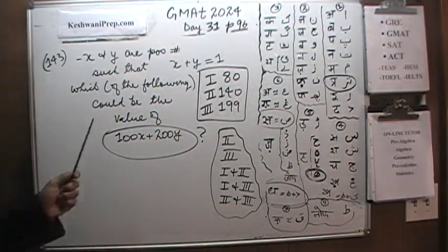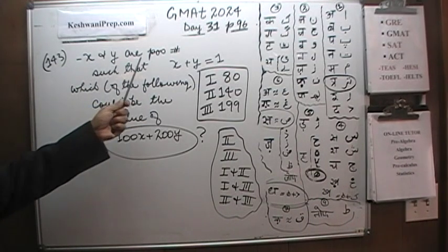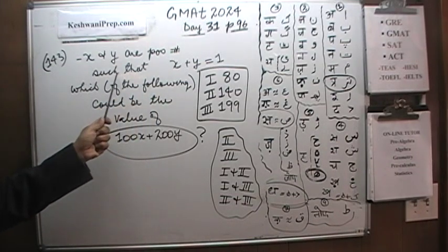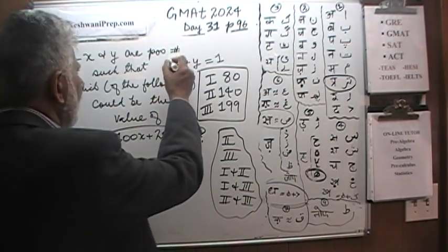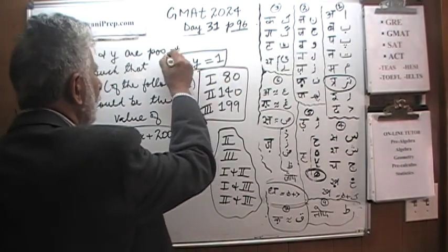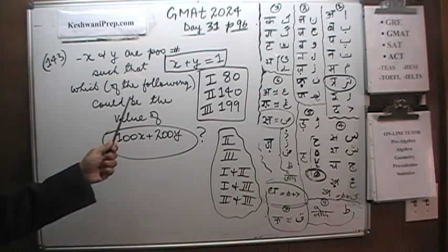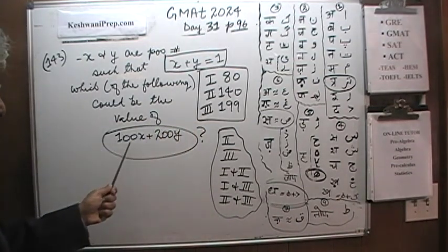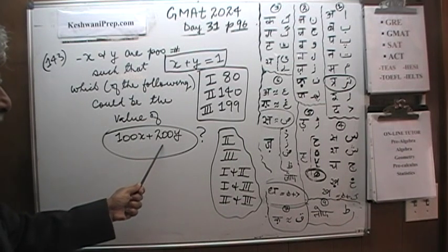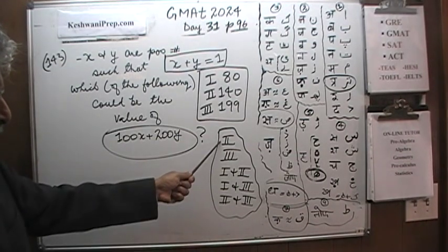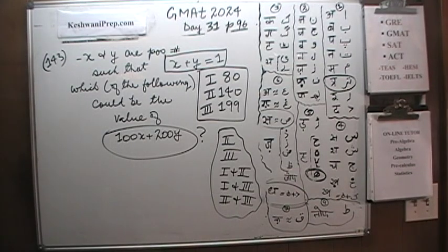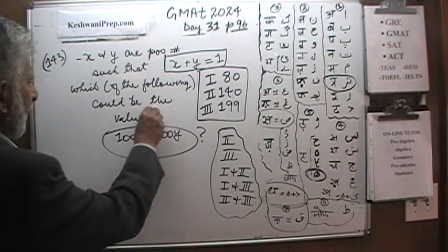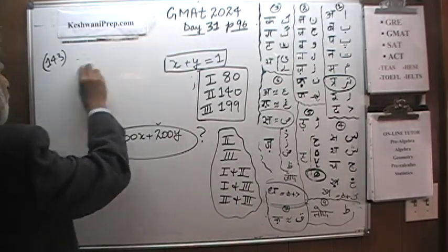Here is the question. The very first problem in the second column, number 143, is already on the blackboard. I am going to read the problem to you, then get out of the frame. I want you to pause the video, do the problem yourself, and then compare your work against the work that we will do together. We are told that X and Y are both positive numbers such that their sum X plus Y equals 1.